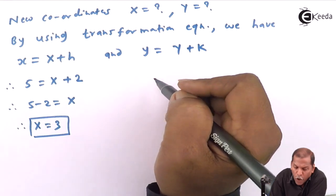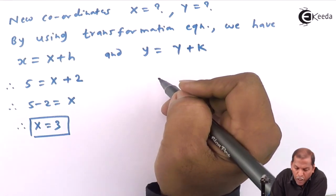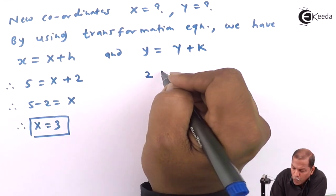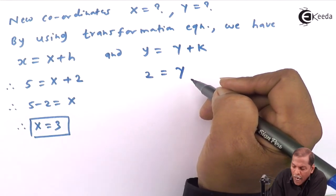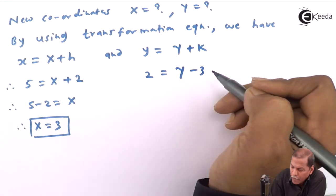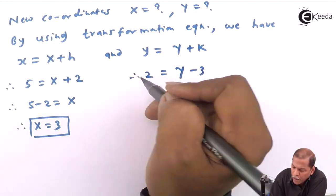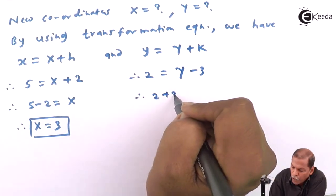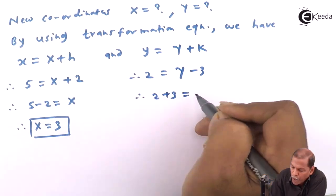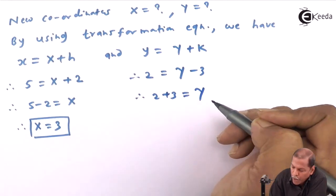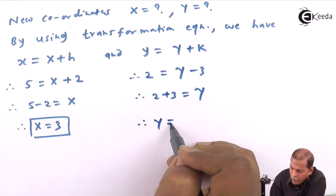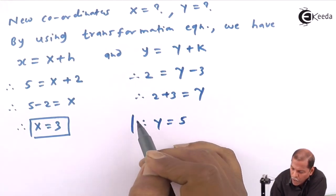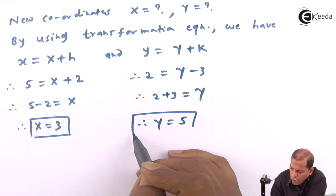Similarly, for small y, we substitute 2 equal to capital Y plus k, and for k we write minus 3. Therefore 2 plus 3 is equal to capital Y, so finally capital Y is equal to 5.